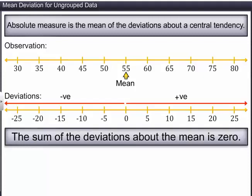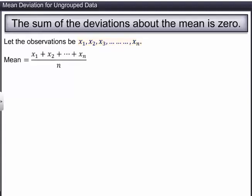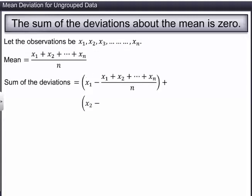Let's prove this result. Let the observations be x1, x2, x3, and so on up to xn. The mean of the observations is equal to the sum of the observations divided by the number of observations. Now, the sum of the deviations is equal to x1 minus the mean, plus x2 minus the mean, and so on, plus xn minus the mean.